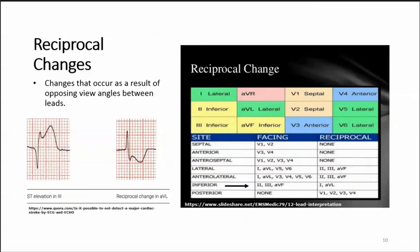Reciprocal changes are changes that occur as a result of opposing view angles between the leads. The key leads to know are leads 1, 2, and AVF — an inferior view — and leads 1 and AVL, which are lateral views. For example, you may see ST elevation in lead 3 while in another lead it's below the isoelectric line and inverted. Reciprocal changes are highly confirmatory for acute ischemic or injury events.